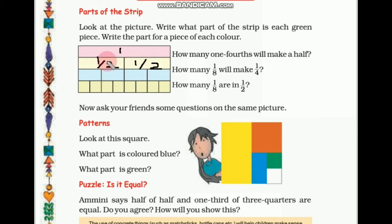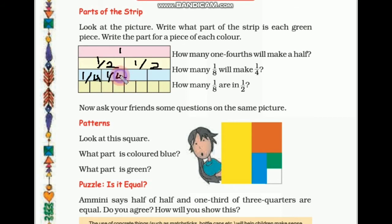Now again this half is divided into 2 pieces — from the half it is divided into 2 pieces. So 2 one-fourths will make 1 half. We can write here: 1 fourth part. Here also 1 fourth part, and same way here also.